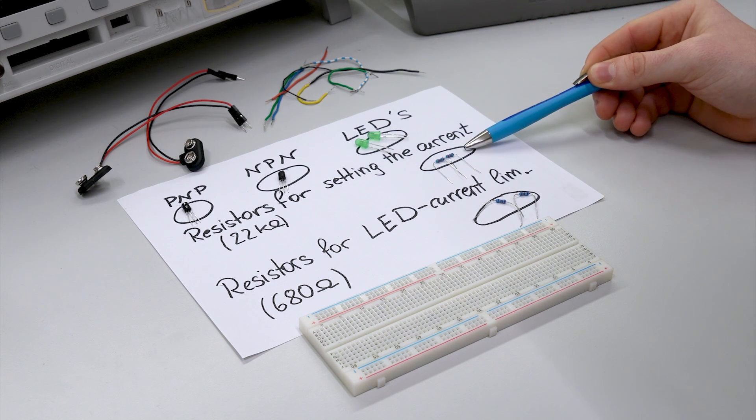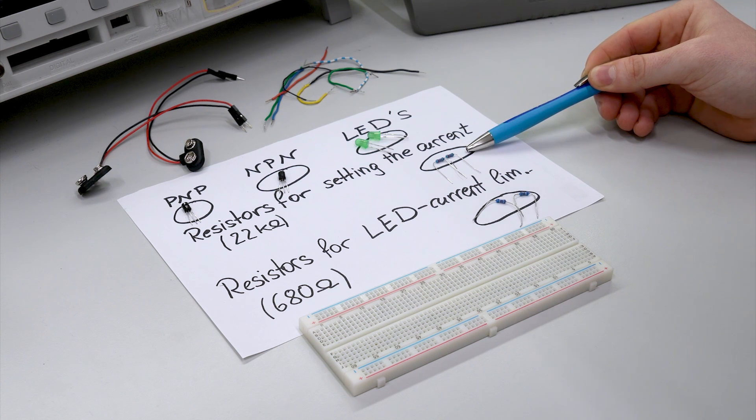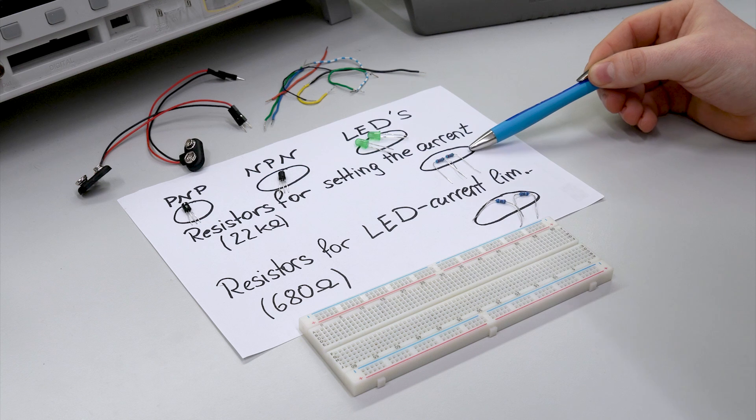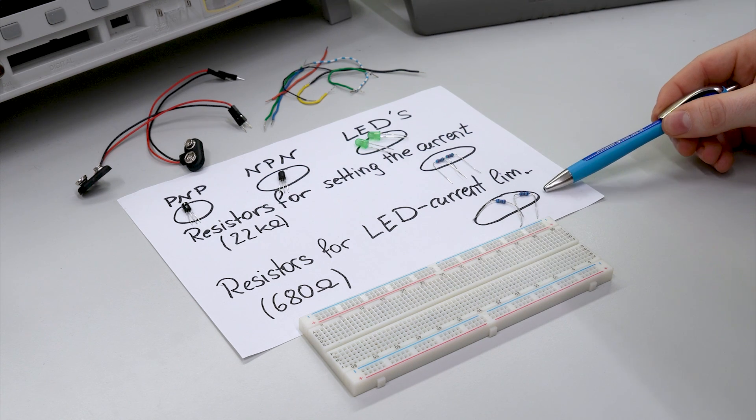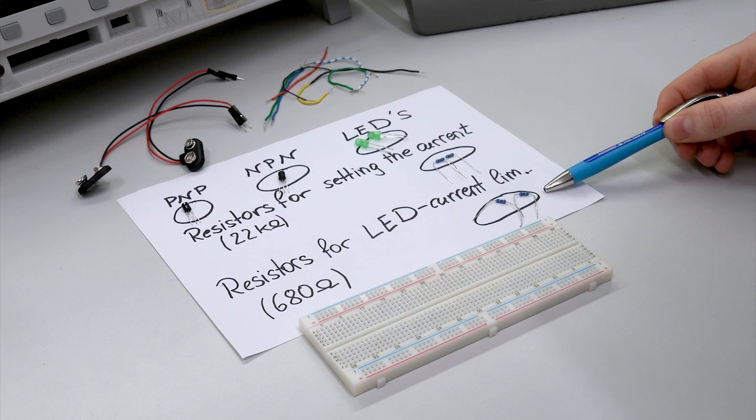The two resistors for setting the current, so they are the base resistors. They set the base current and therefore are setting the collector current. And then there are two resistors for limiting the current through the LEDs so that the LEDs don't get destroyed.